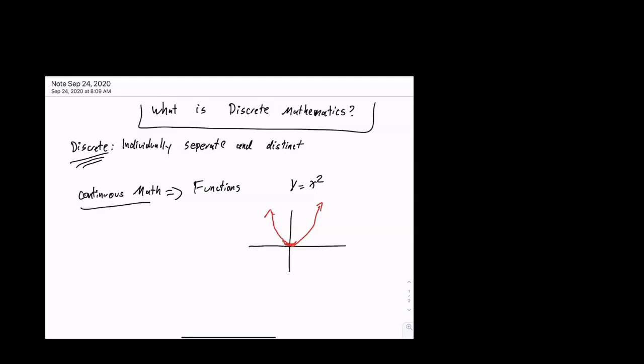And continuous, if you look at this, this graph has values everywhere. It has every single point. It's everywhere. It's continuous. I never have to lift off the pencil, right?